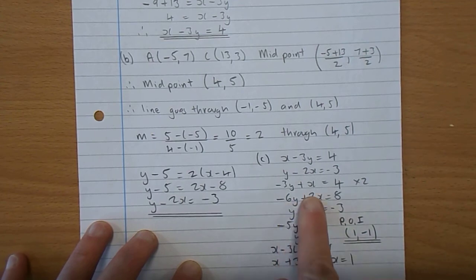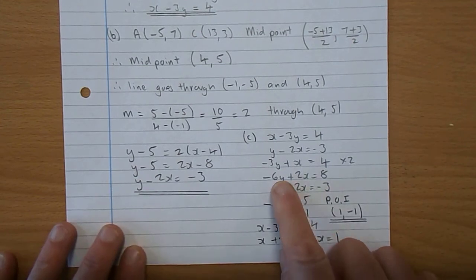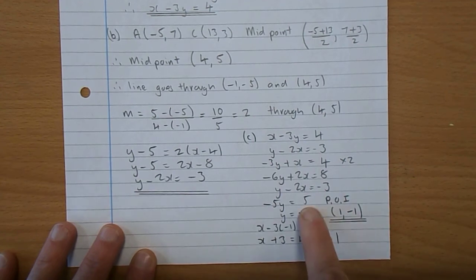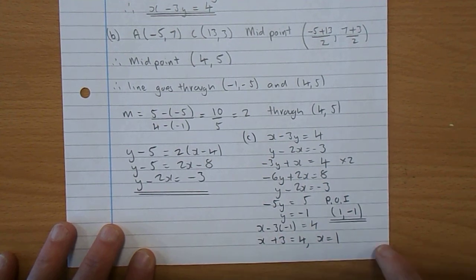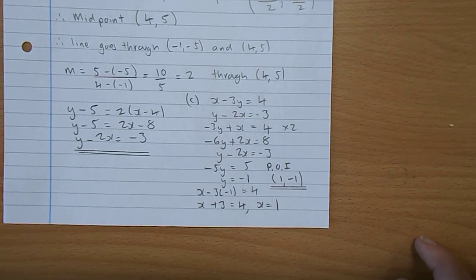So as you can see, the two things I'm comparing. So minus 6Y add Y gives you minus 5Y. Plus 2X take 2X, they've gone. 8 take 3 is 5. Divide 5 by minus 5 and you get minus 1. So Y is minus 1. And X take 3Y has to be 4. With Y being minus 1, you have X plus 3 is 4. So X is 1. So the point of intersection is 1, minus 1.